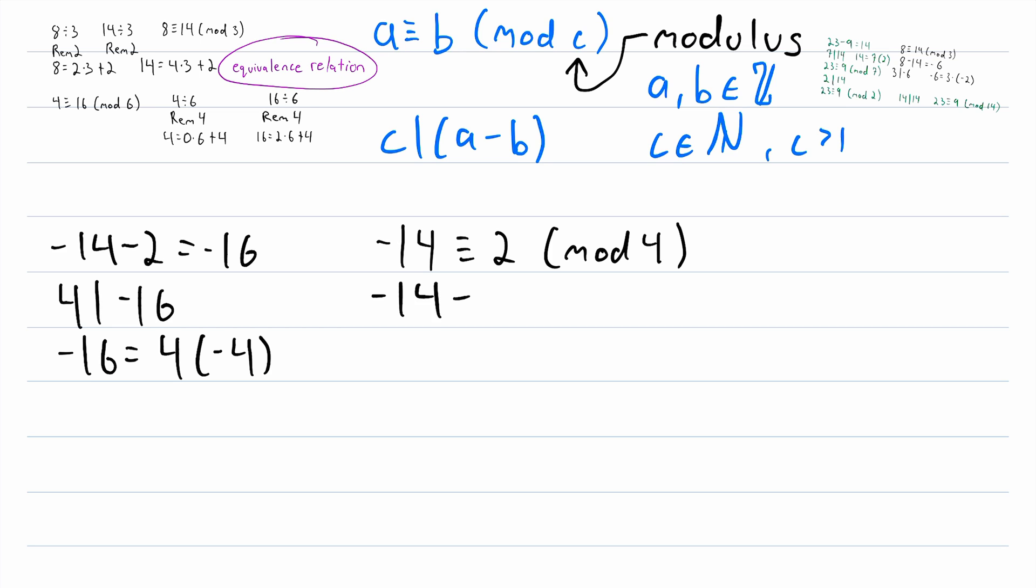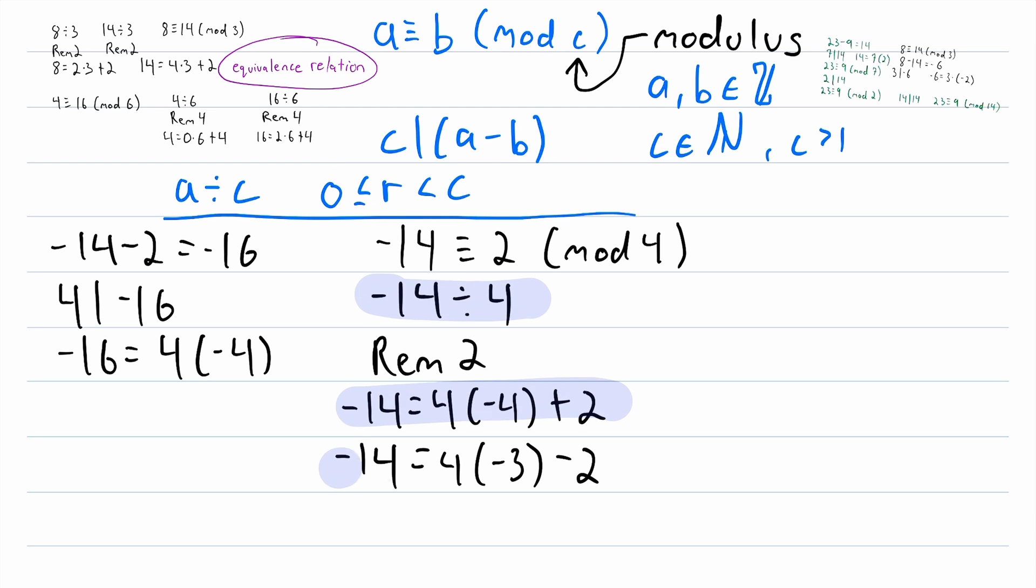Well, what is the remainder of negative 14 when divided by 4? The remainder, in this case, is positive 2, because negative 14 is equal to 4 multiplied by negative 4 plus 2. And you might be thinking, well, wait a minute, negative 14 is also equal to 4 times negative 3 minus 2. So why isn't negative 2 the remainder? Well, in this context, if we have a number a divided by c, and we want to know the remainder r, we want r, the remainder, to be greater than or equal to 0 and less than c. So we consider the remainder to be a positive number. And that's why positive 2 is the remainder, in this case, and not negative 2.